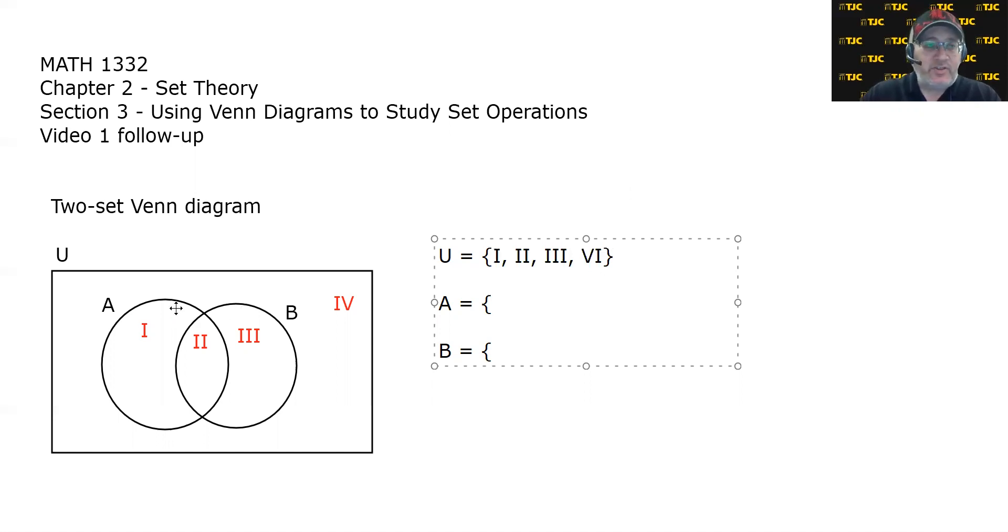However, set A, if you'll notice, is made up of two regions. It's comprised of regions 1 and 2. So if we want to think of A as a collection of elements where each element represents a region, it would be the set containing regions 1 and 2. And set B is made of regions 2 and 3.